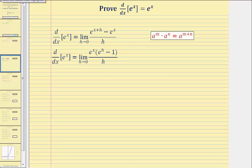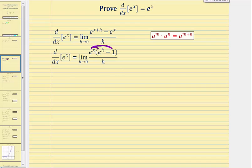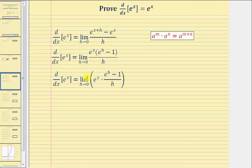Let's just check this by distributing: e to the x times e to the h is equal to e to the power of x plus h, and then we have minus e to the x times one, which gives us minus e to the x. Now because we have a product in the numerator, we'll write this as a limit of a product.